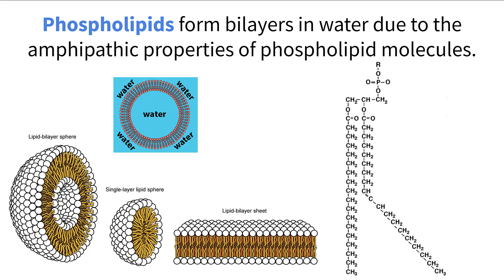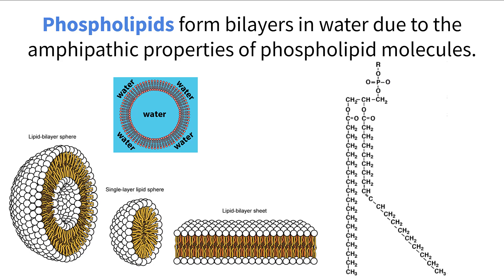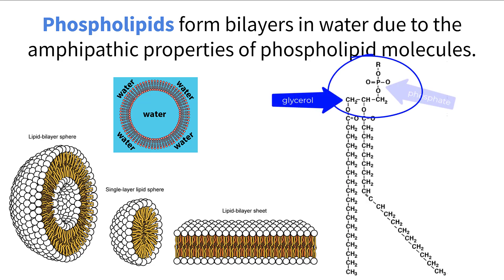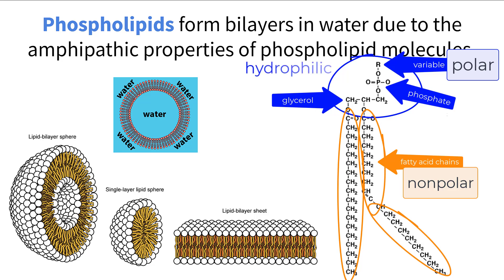Every cell membrane is primarily made up of structures called phospholipids. These individual molecules contain a head made up of glycerol, phosphate, and a variable region, and tails that are fatty acid chains. The variable region of the phospholipid head is polar, meaning it is attracted to other polar molecules like water. And the tail ends are nonpolar, meaning they repel water. These structures take on the terms hydrophilic and hydrophobic for these properties.